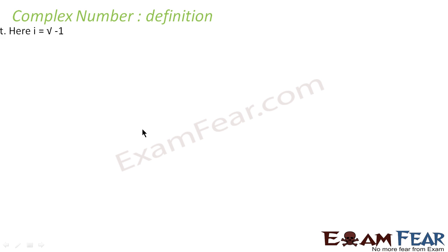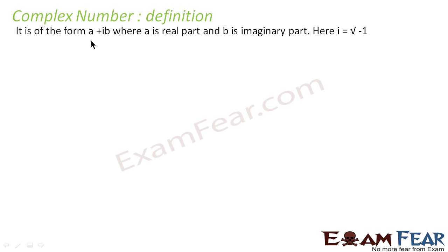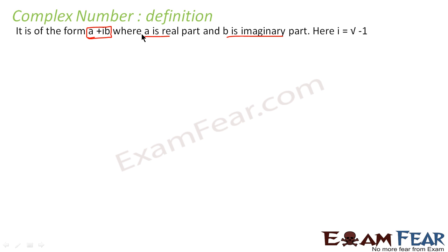Let's define complex number. A complex number is any number in the form of a plus ib, where a is the real part and b is the imaginary part. And what is i? i is the square root of minus 1.